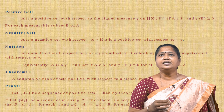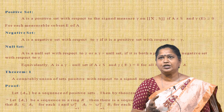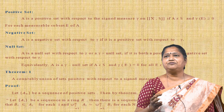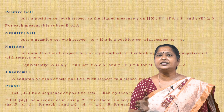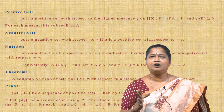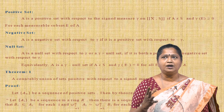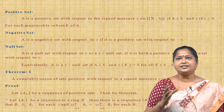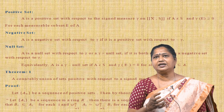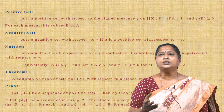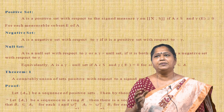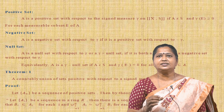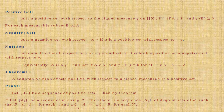Positive set: A is a positive set with respect to the signed measure ν on (X, S) if A ∈ S and ν(E) ≥ 0 for each measurable set E ⊆ A. If all measures are positive it becomes a positive set; otherwise it becomes a negative set. A is a negative set with respect to ν if it is a positive set with respect to −ν. A set is a null set with respect to ν if it is both a positive and negative set with respect to ν.